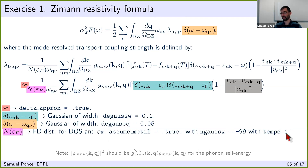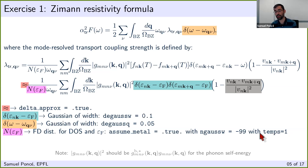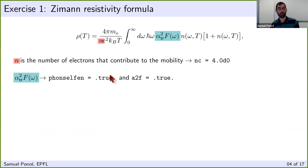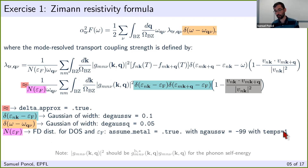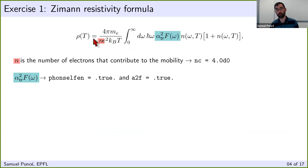The temperature you input only impacts the DOS calculation and the determination of the Fermi level, and it should be chosen so that the metal is converged within the Fermi-Dirac distribution. However, when computing conductivity there is a separate temperature variable — the input temp is not the temperature in the conductivity formula. EPW will post-process and output resistivity for temperatures ranging from 1 to 1000 K by default.